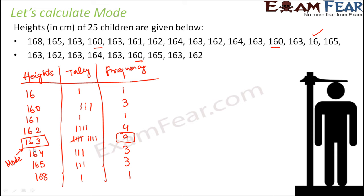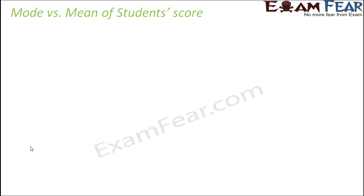This means that the maximum number of children have a height of 163 centimeters. When you look at a class of 25 students, most students have a height of 163 cm. In that sense, mode is also a measure of central tendency, because it represents the height acquired by the most students in the group.